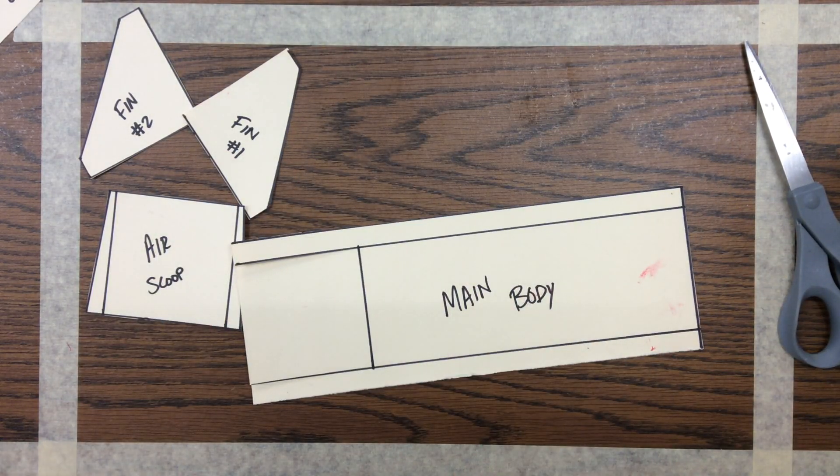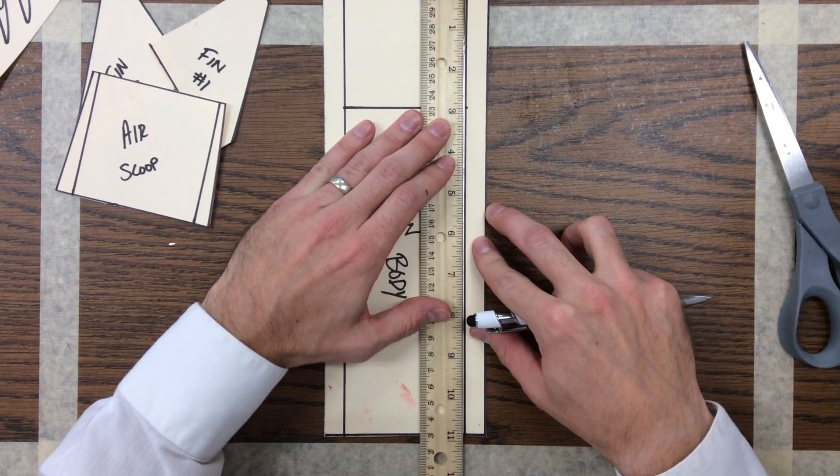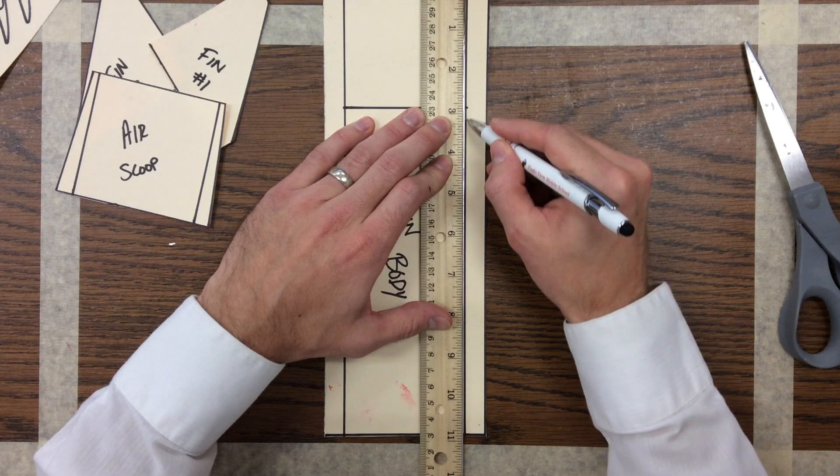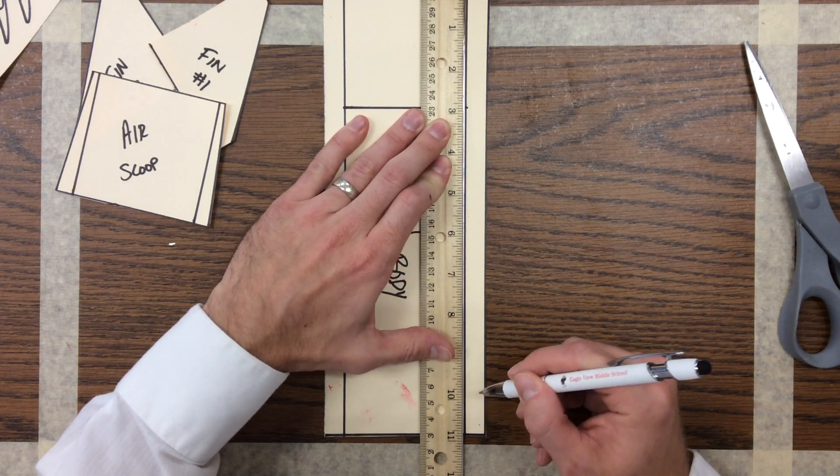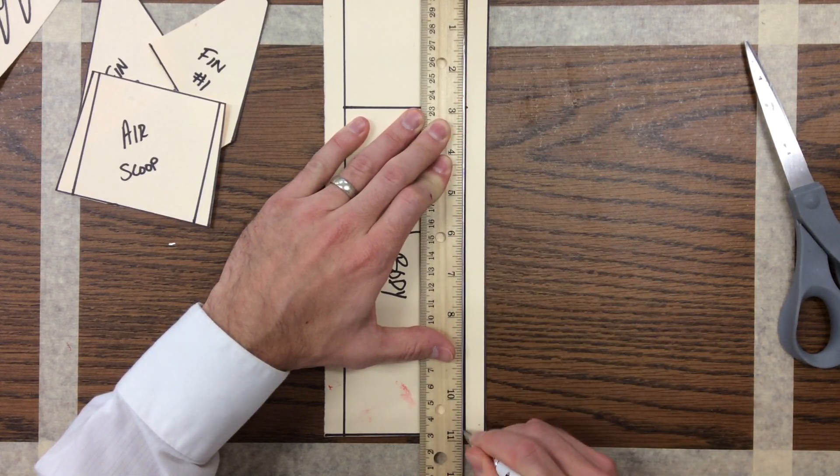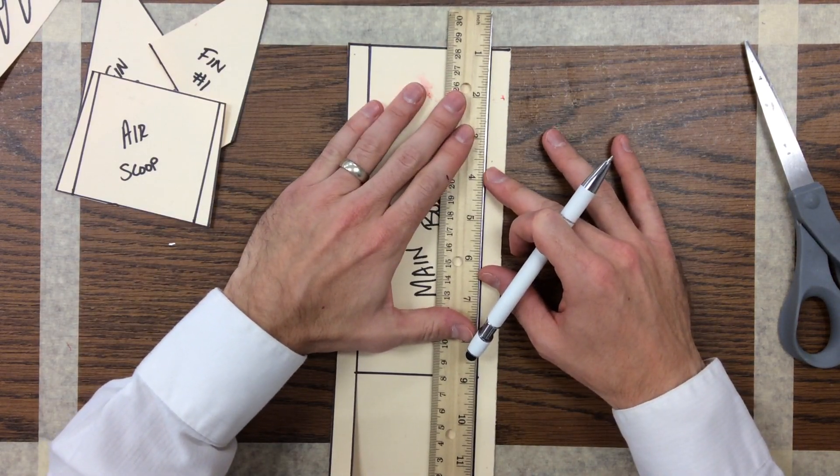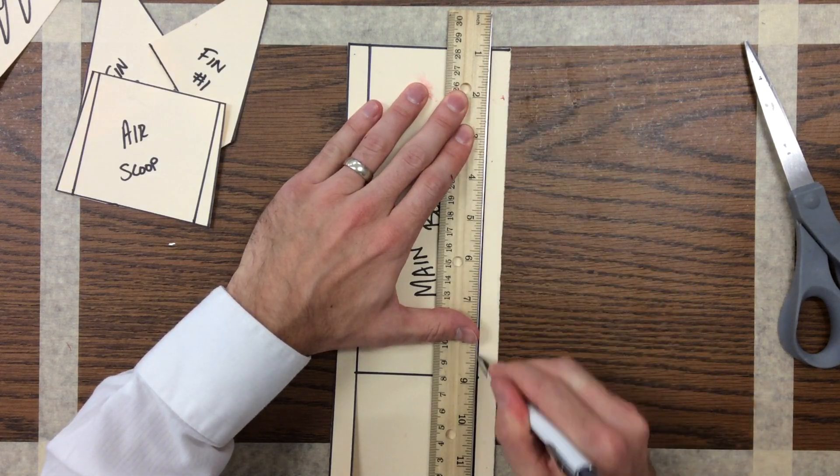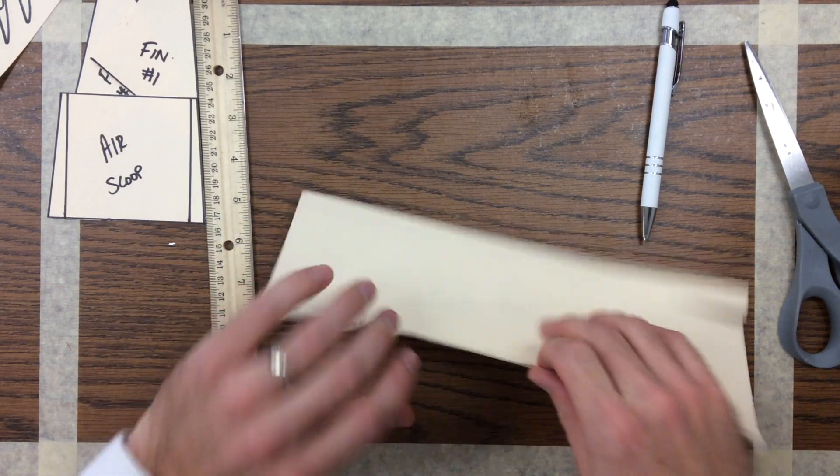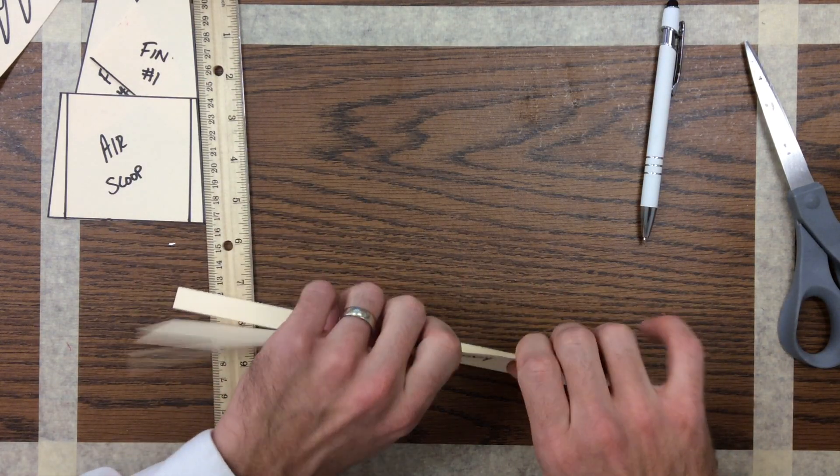Now we want to make sure all of our folds are crisp 90 degree folds. So what I'm going to do is score the manila folder by using a pen or pencil lined up with the ruler and I'm going to push down pretty hard with the pen. I don't want to push down too hard where I cut the manila folder, but you push down hard you can feel the indentation that you make which is going to allow you to get a nice clean crisp fold. So do it on both sides and as you can see I can fold that skimmer right on that mark I just made. So I get that nice clean fold.